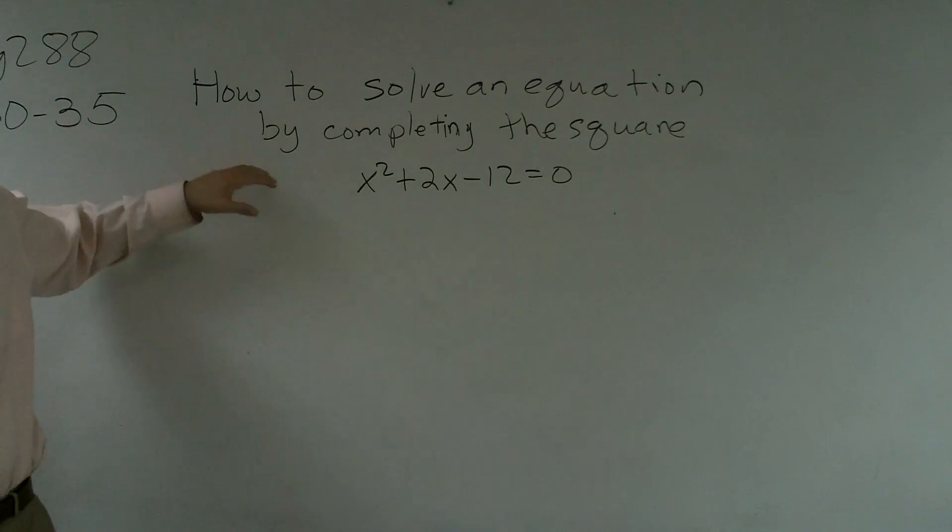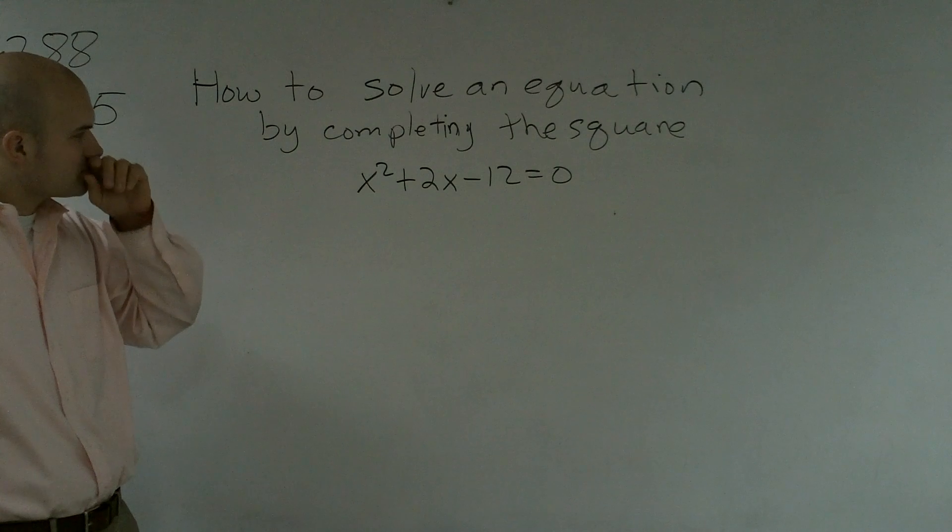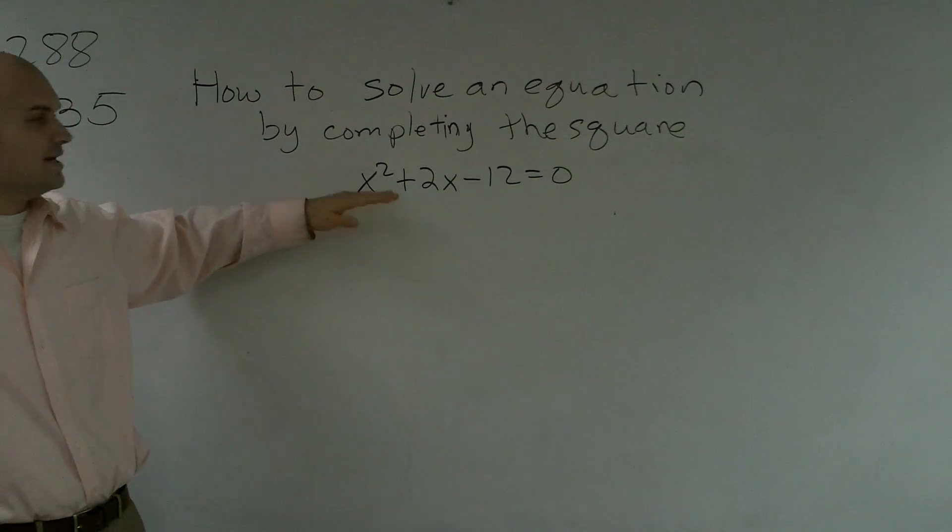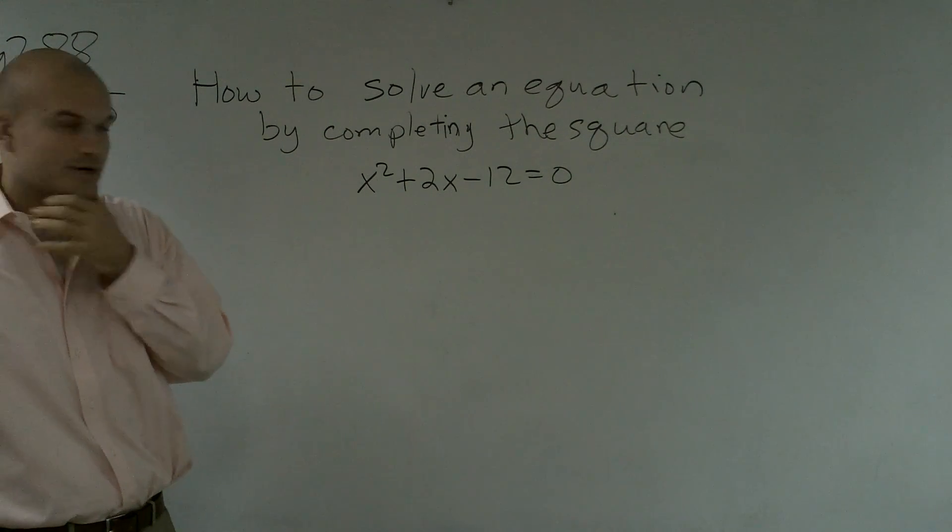All right, what I'd like to do is show you guys how to solve an equation by completing the square. Looking at this equation, x squared plus 2x minus 12 equals 0,